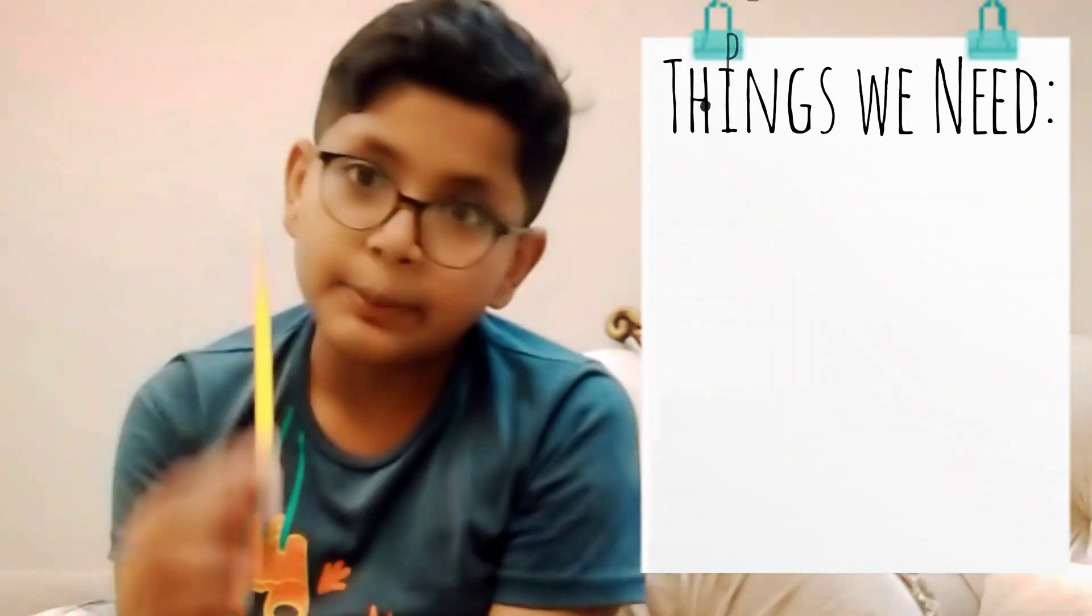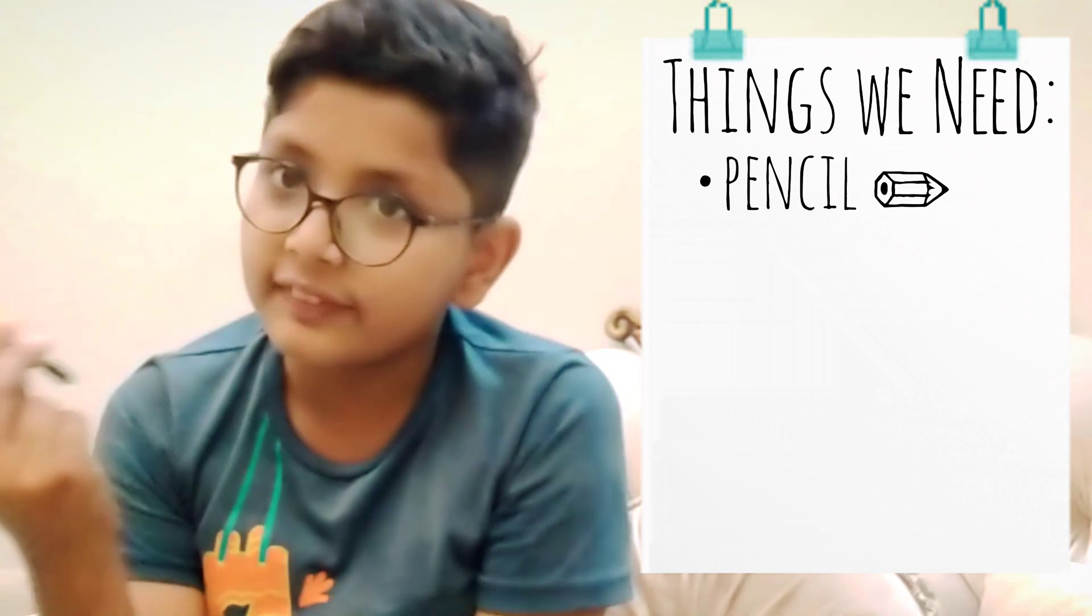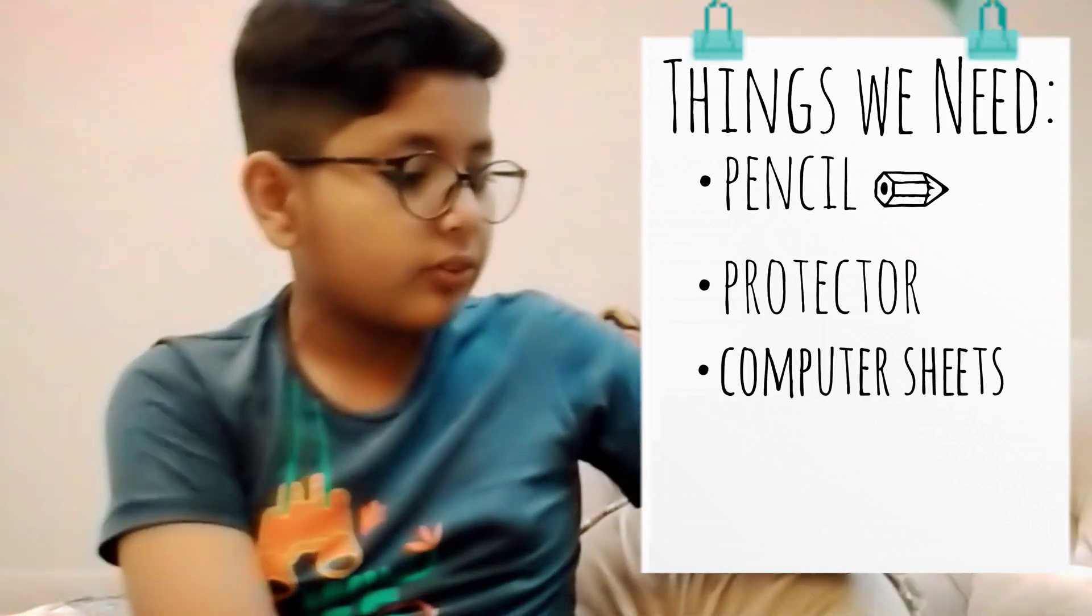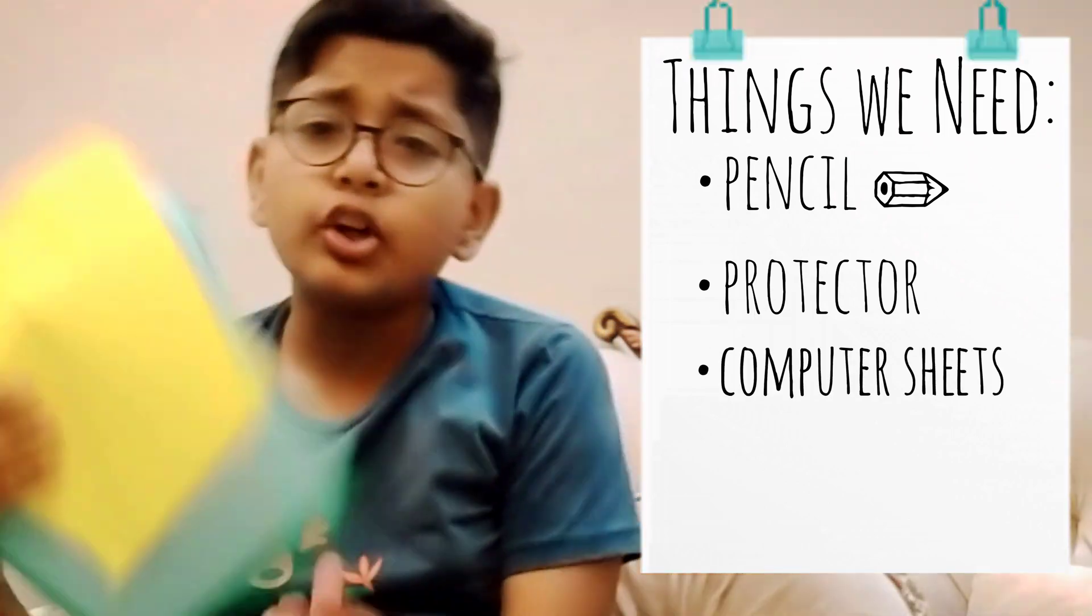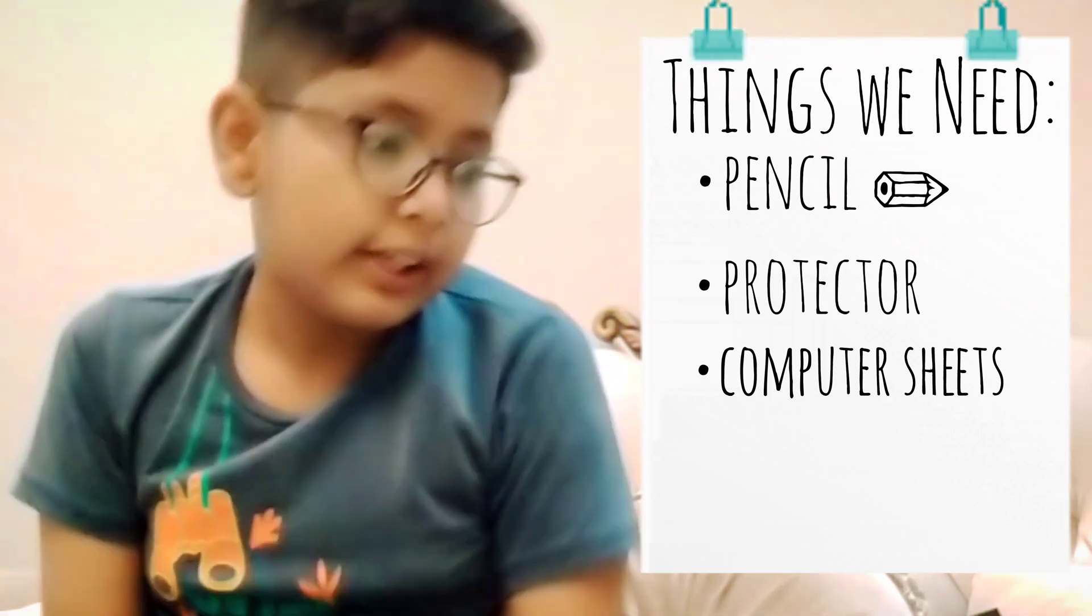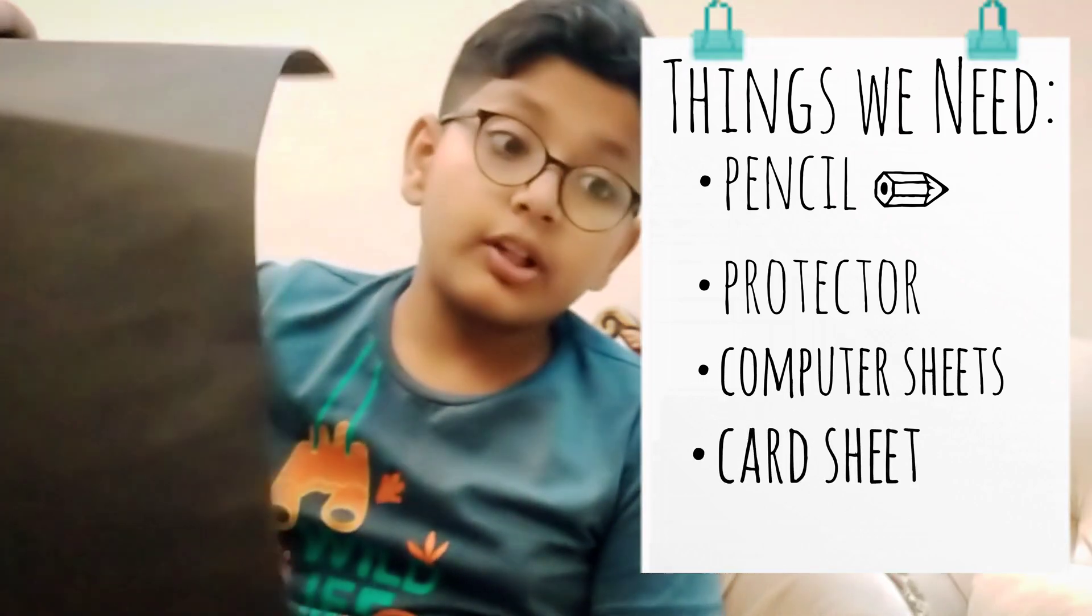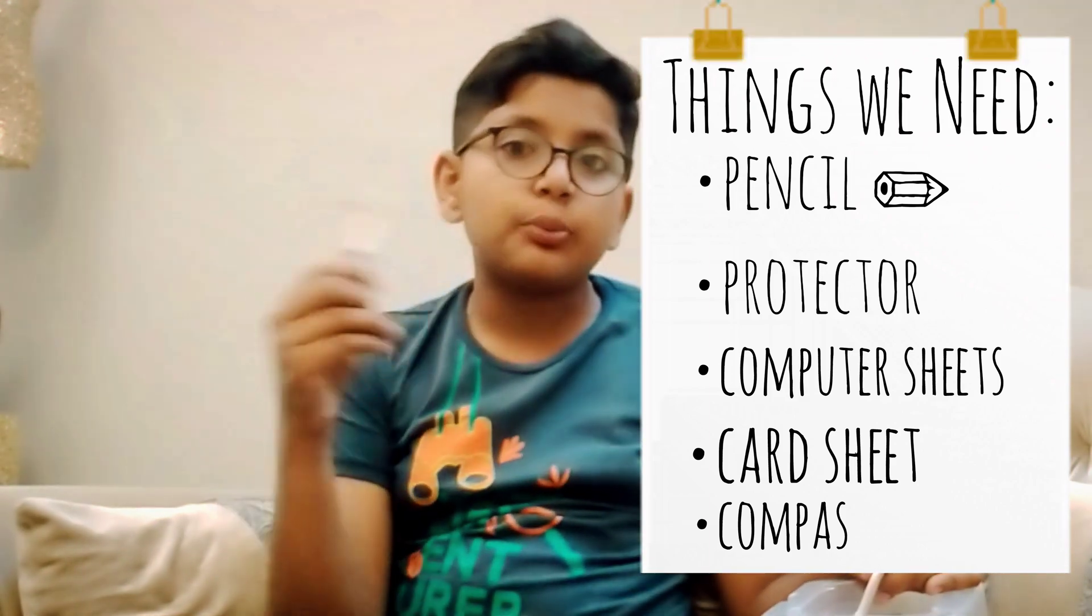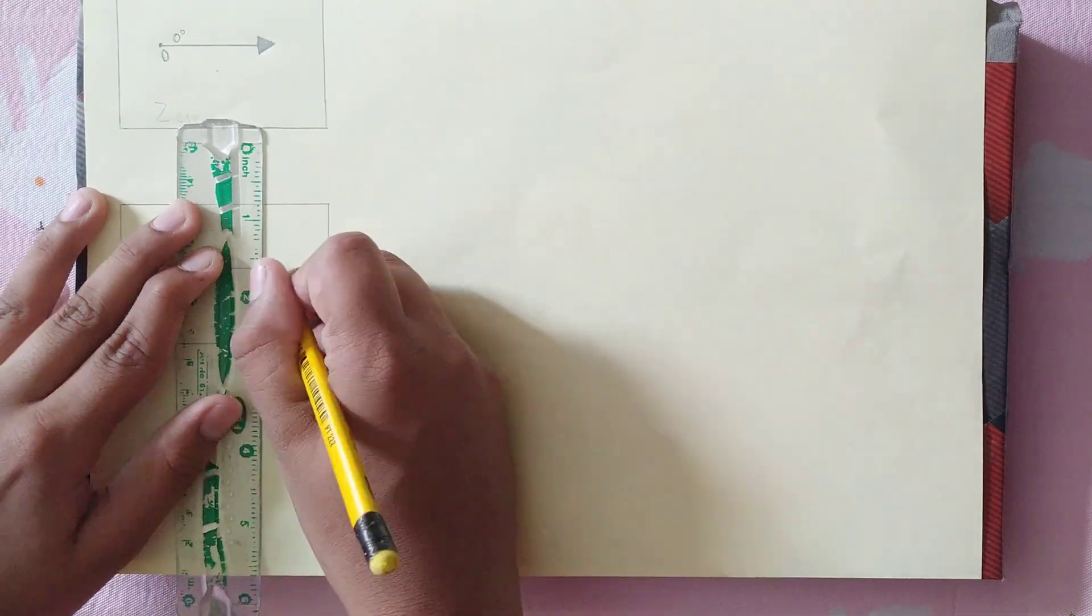Now I will tell you what we would need in the project. Let's start. So the first and most important thing that you all will know is a pencil. A pencil is very useful. A protractor, or D, whatever you want to call it. Some computer papers, it's your choice which one you will pick. Black card sheet. Compass, compass is very important because we need to make circles. So guys, now let's start.